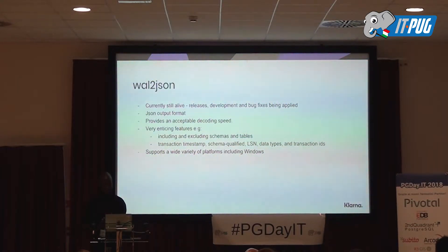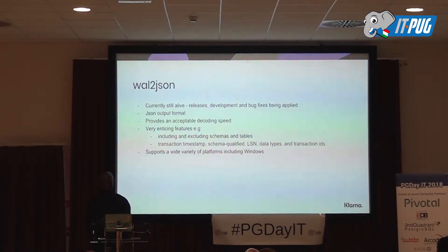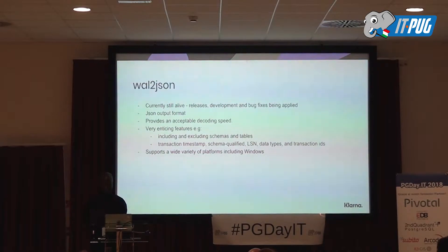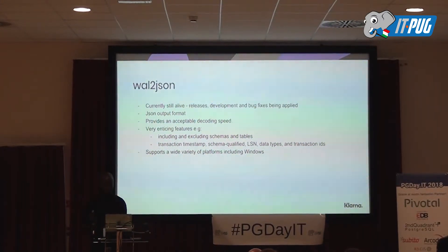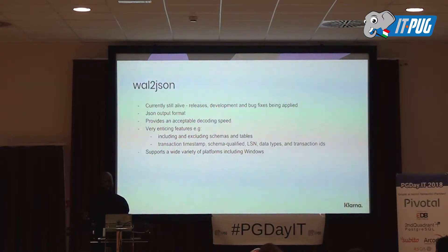So we turned to wal2json. It's currently alive, still being developed, still has a lot of bug fixes and releases. It does have the JSON output format and provides acceptable decoding speed, which is an important factor. It also has some very exciting features: you can include or exclude schemas you're not interested in, you can get the transaction timestamp and the LSN, and it also gives you the data types. So if you are moving changes from Postgres to a different database, you can do the data type transformation. It also supports a lot of environments, even Windows.